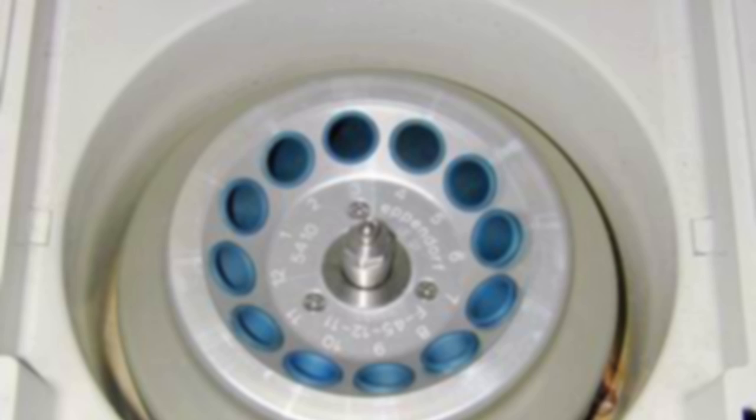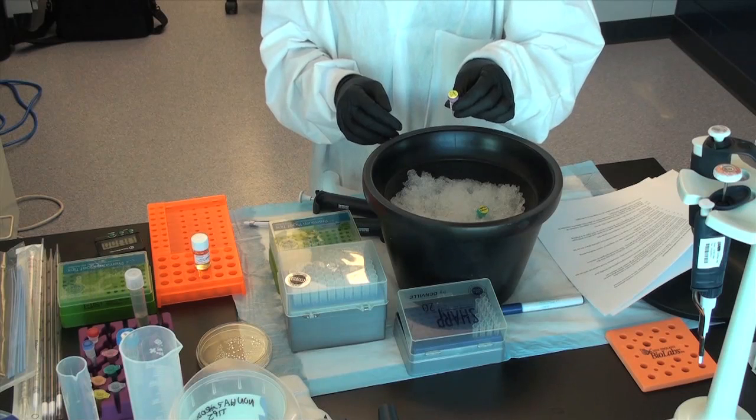Step 11: Place the vial in a microcentrifuge rack on its side and secure with tape. Shake the vial at 37 degrees Celsius for exactly one hour at 225 RPM in a shaking incubator.